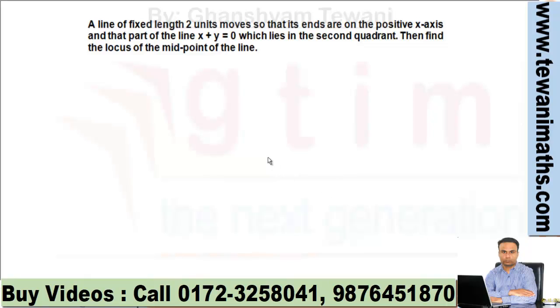A line of fixed length 2 units moves so that its ends are on the positive x-axis and that part of the line x + y = 0 which lies in the second quadrant.